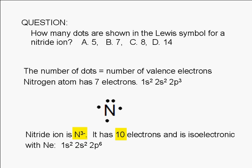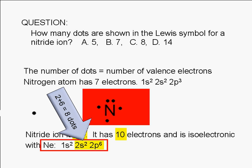A nitride ion has 10 electrons and is isoelectronic with neon. It has the same electron configuration as a neon atom. Instead of five dots, we need to show three more dots.